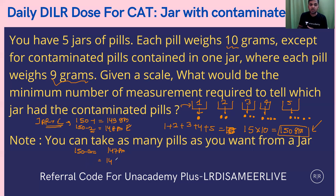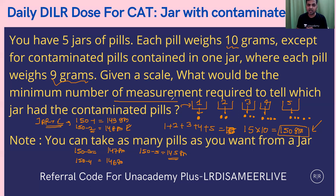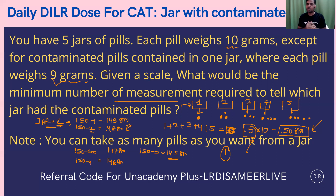If the weight comes out to be 146 grams — that is four grams less than 150 — that means four pills are contaminated, and since I'm taking four pills from jar number 4, jar number 4 is contaminated. If five pills are contaminated, the weight would be 145 grams, and since I'm taking five pills from jar number 5, jar number 5 contains the contaminated pill. By looking at the weight of these 15 pills, I can tell which particular jar contains the contaminated pill.